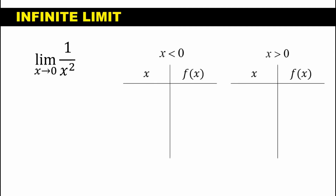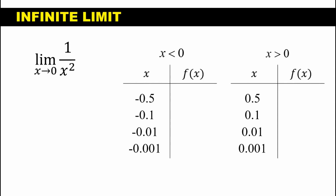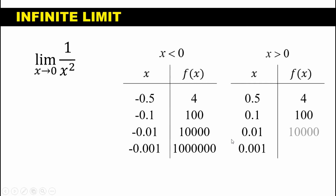By use of a table of values, we list down all values approaching 0 from the left and from the right, and then we evaluate their corresponding y values and observe the behavior of f(x). Substituting negative 0.5, our answer becomes 4. Continuing to substitute values closer to 0, we get 100, 10,000, and 1,000,000 from the left side, and 4, 100, 10,000, and 1,000,000 from the right side. This is simply substitution — you substitute the value of x into your function to get the corresponding y value.